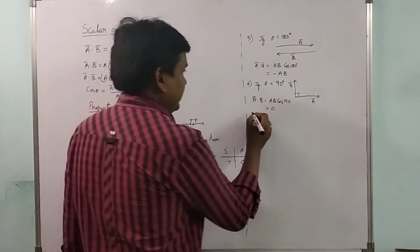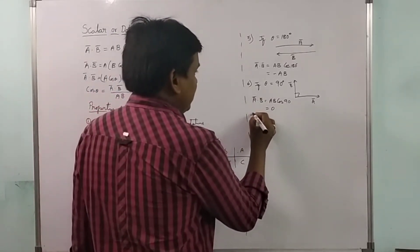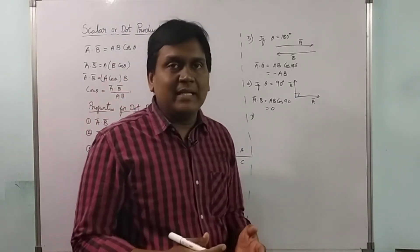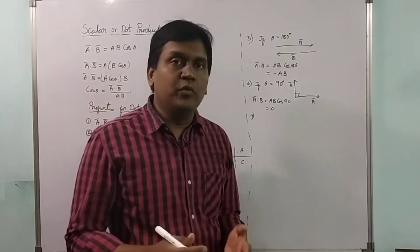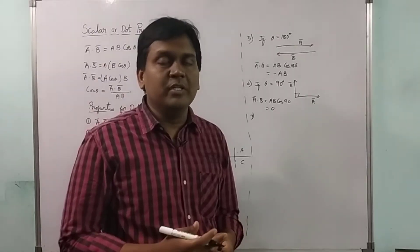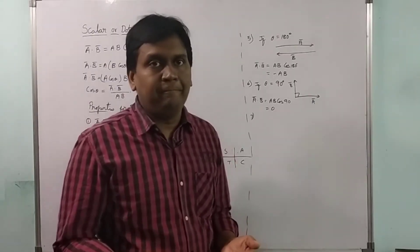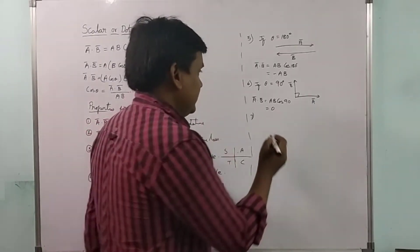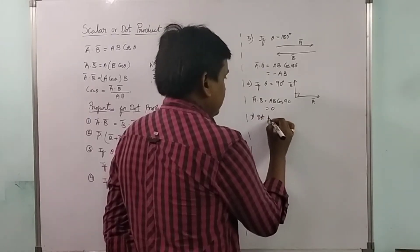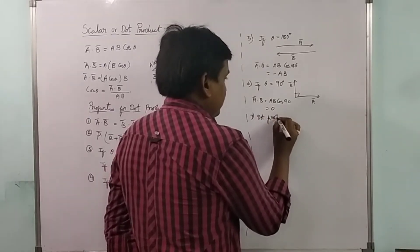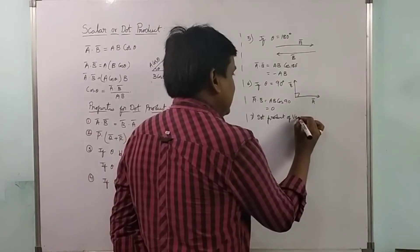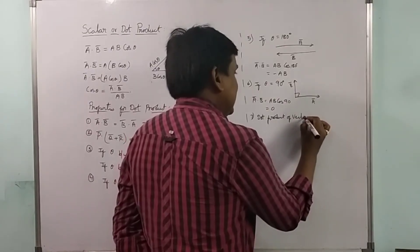Next, the dot product of a vector with itself: its result will be the square of the magnitude.